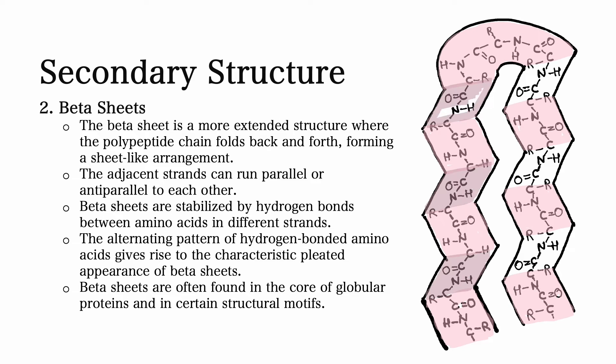Beta sheets. A beta sheet is a more extended structure where the polypeptide chain folds back and forth, forming a sheet-like arrangement. The adjacent strands can run parallel or antiparallel to each other. Beta sheets are stabilized by hydrogen bonds between amino acids in different strands.